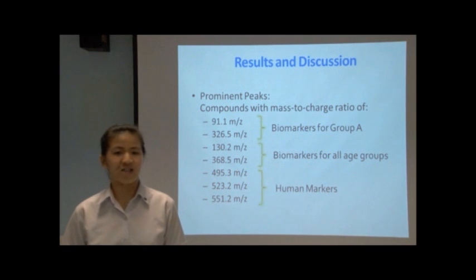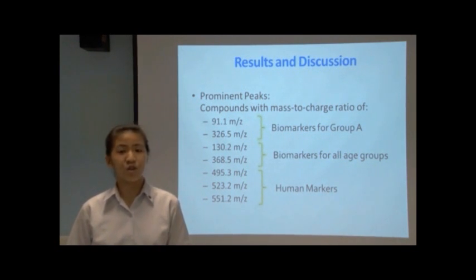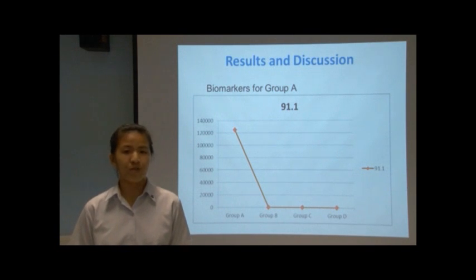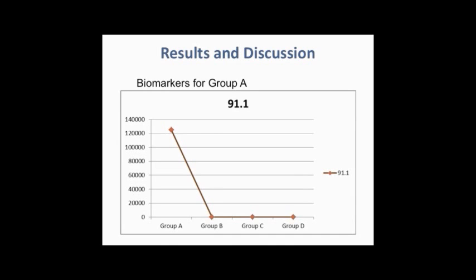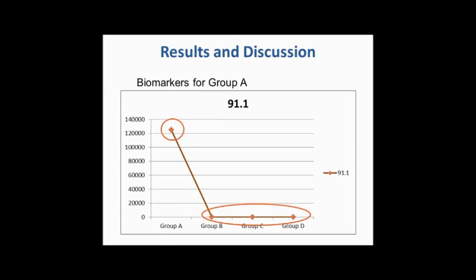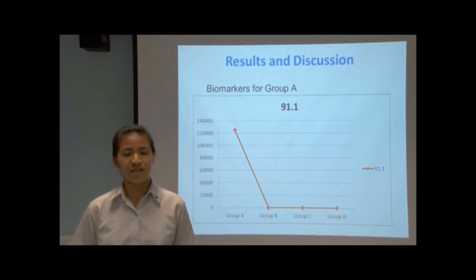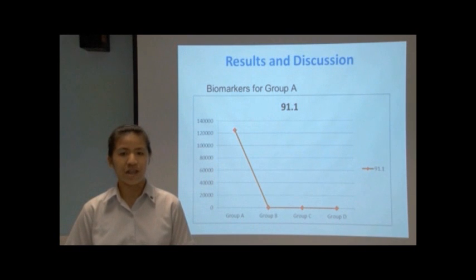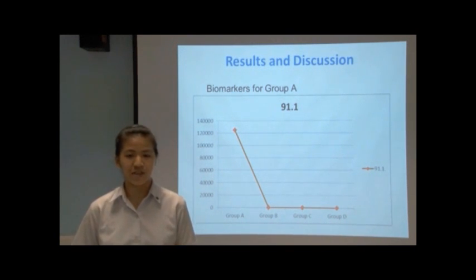Analysis of current data shows that there are 7 prominent peaks, including 2 biomarkers for group A, 2 biomarkers for all age groups, and 3 human biomarkers. For the first biomarker for group A, we have a compound with the mass-to-charge ratio of 91.1. The graph clearly shows that the signal-to-noise value was highest in group A while comparatively lower in other age groups, with SN values of less than 3. This suggests that this compound is significantly present in young children and the amount decreases exponentially with age, hence it serves as a viable age biomarker for group A.